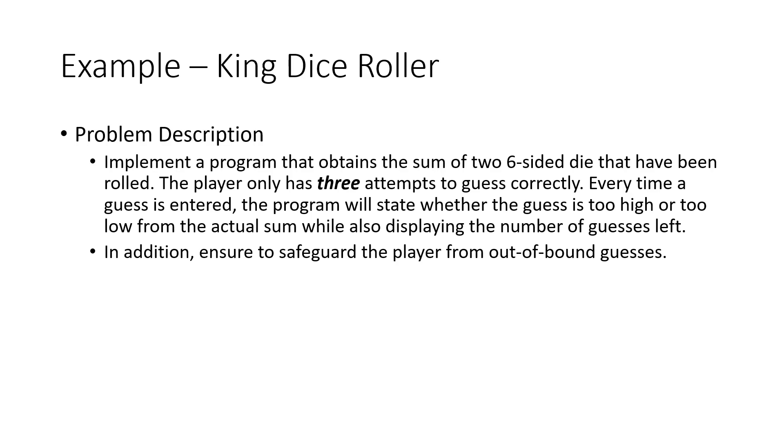Well, just think about it this way. I'm going to read out this problem description. It starts out with: Implement a program that obtains the sum of two six-sided die that have been rolled. The player only has three attempts to guess correctly. Every time a guess is entered, the program will state whether the guess is too high or too low from the actual sum while also displaying the number of guesses left. Again, the devil is in the detail. Think about what the problem is asking you to do. In addition to the first bullet, there's also the additional requirement that we need to ensure to safeguard the player from out-of-bound guesses. Focus on what the problem is asking you to do. It is always helpful to write things out and think about how to break up the problem.